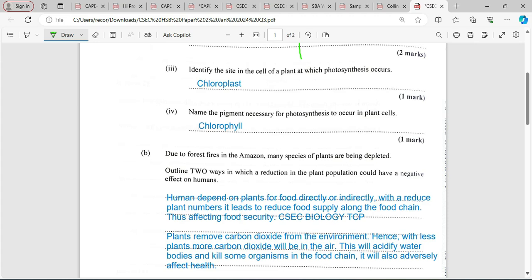Plants also remove carbon dioxide from the environment. Hence with less plants, more carbon dioxide will be in the air. This will acidify water bodies and kill some organisms, and the food chain will be affected.